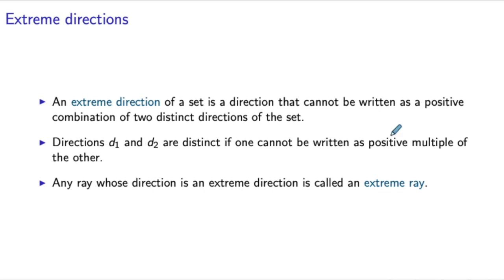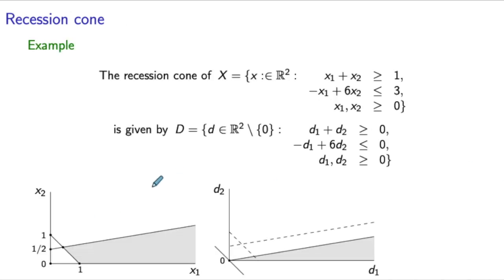To conclude, an extreme direction of a set is a direction that cannot be written as a positive combination of two distinct directions of the set. Two directions d1 and d2 are distinct if one cannot be written as a positive multiple of the other. Any ray whose direction is an extreme direction is called an extreme ray. In the example, the set X has two extreme directions corresponding to its two boundary lines, and all other directions can be obtained from these two by positive combinations.